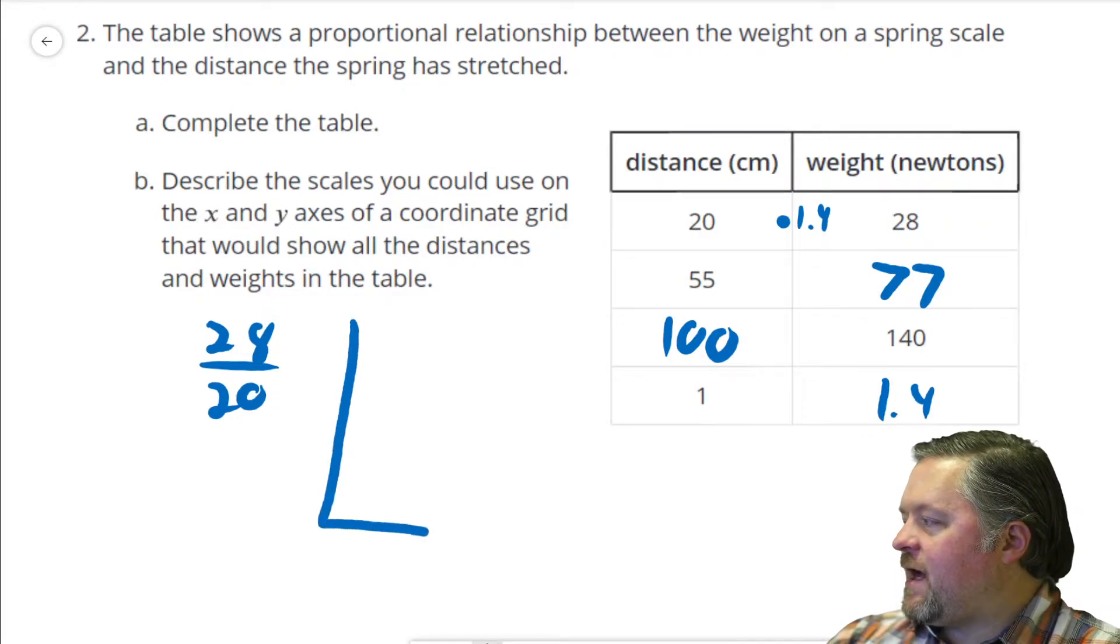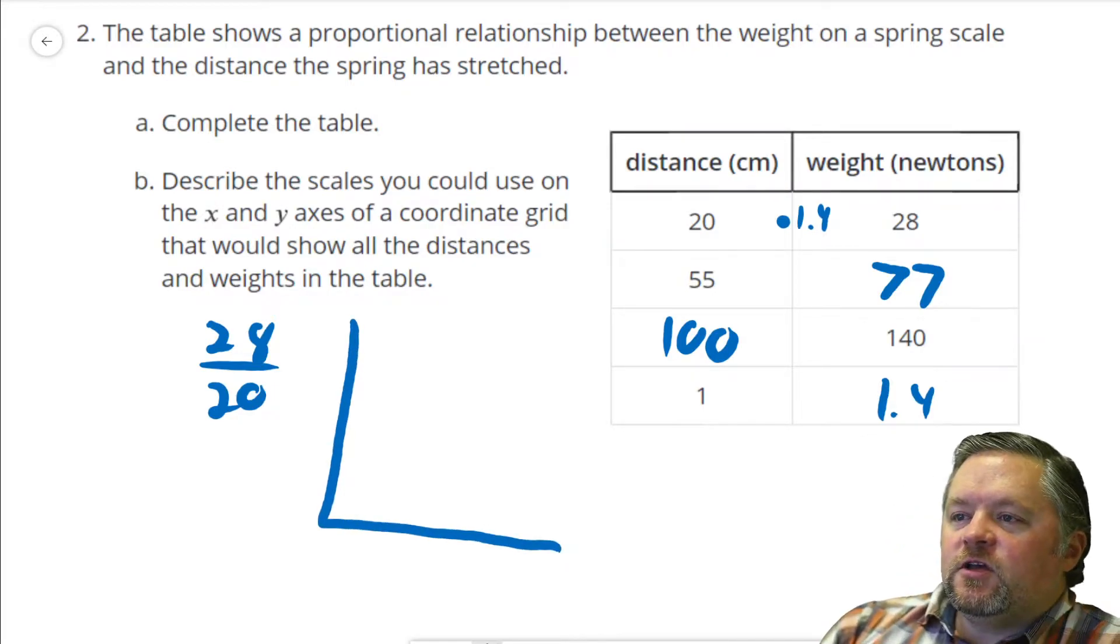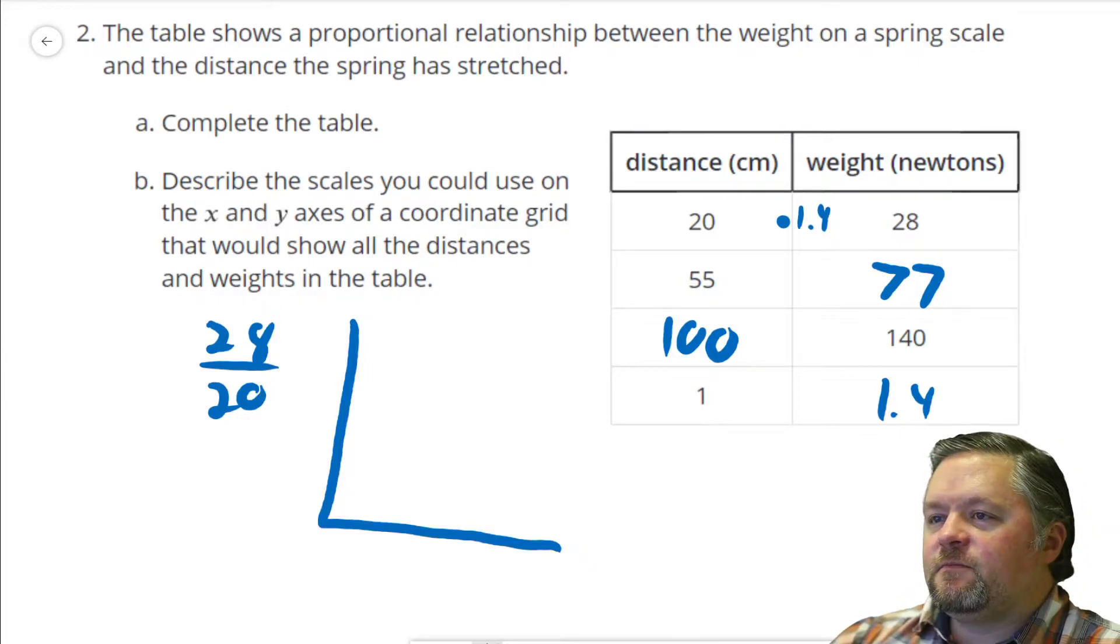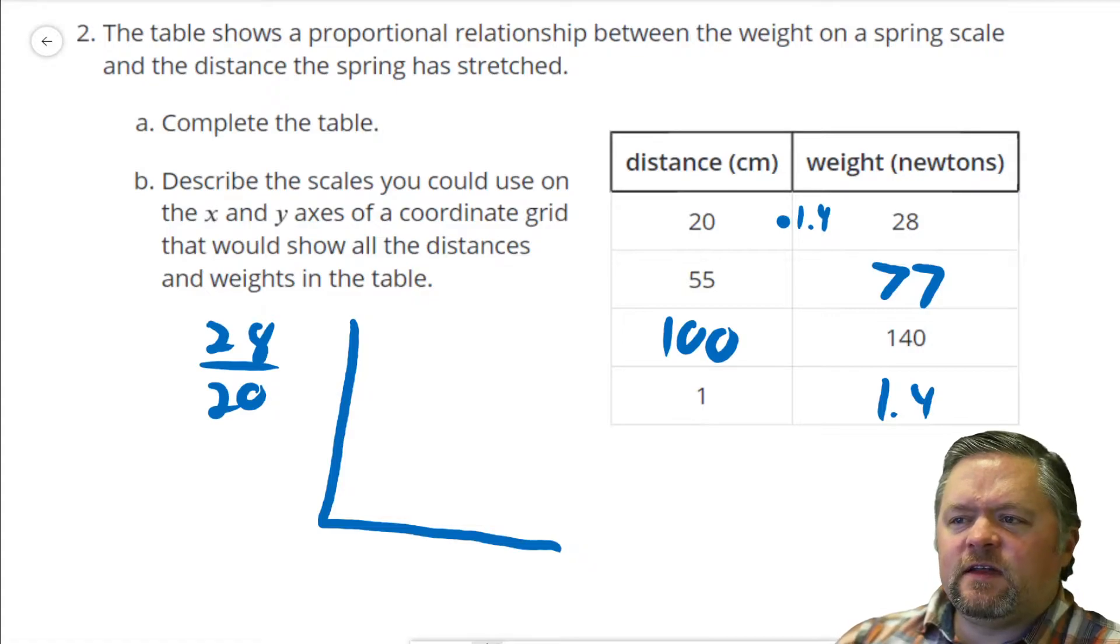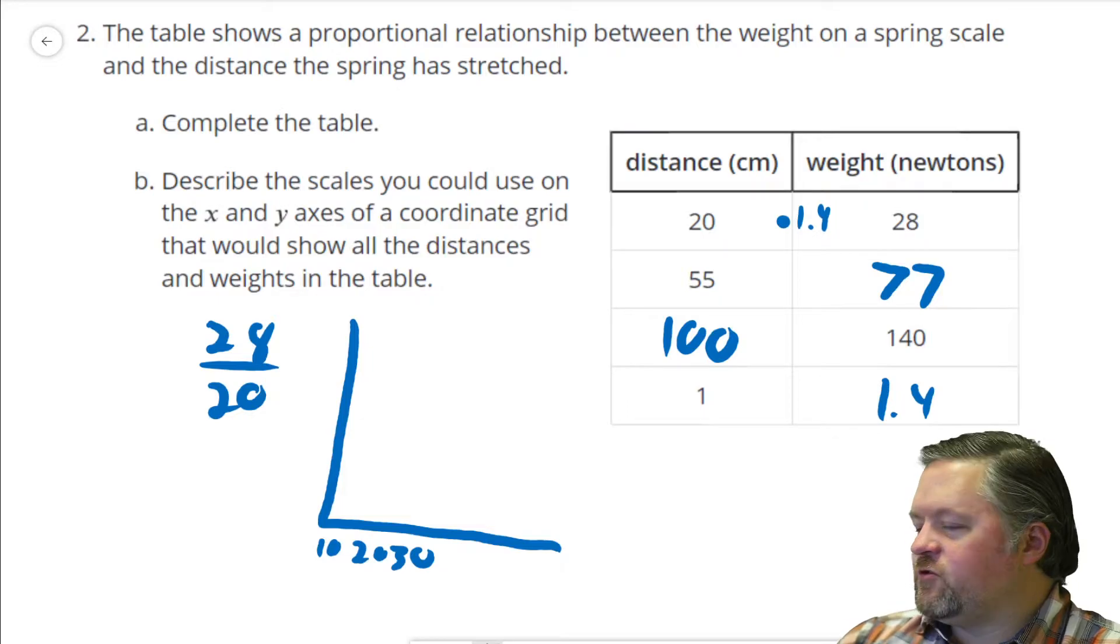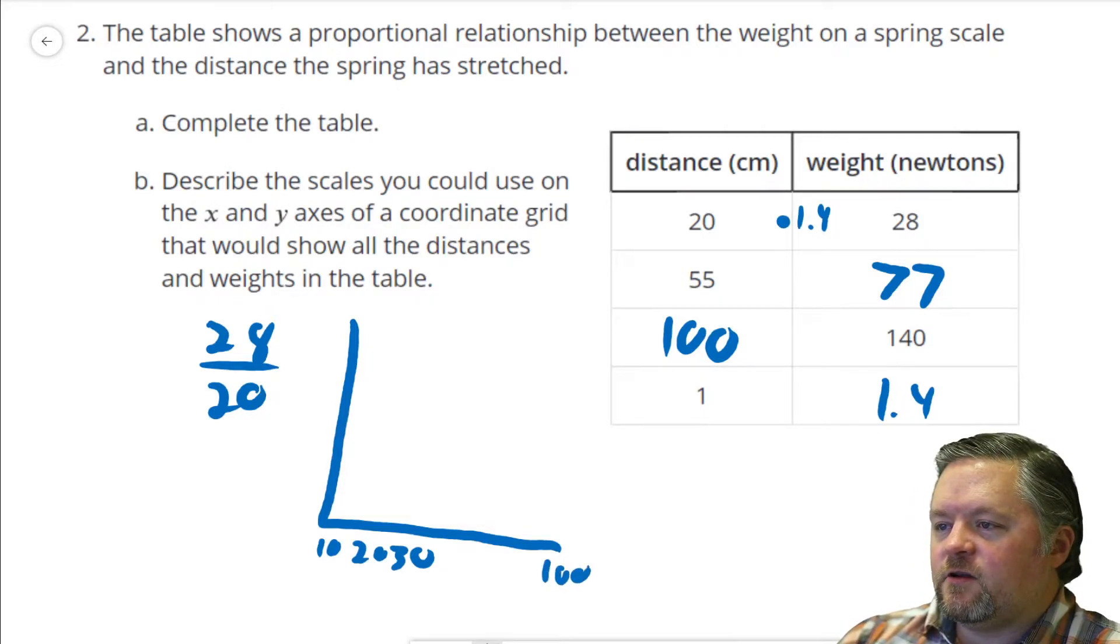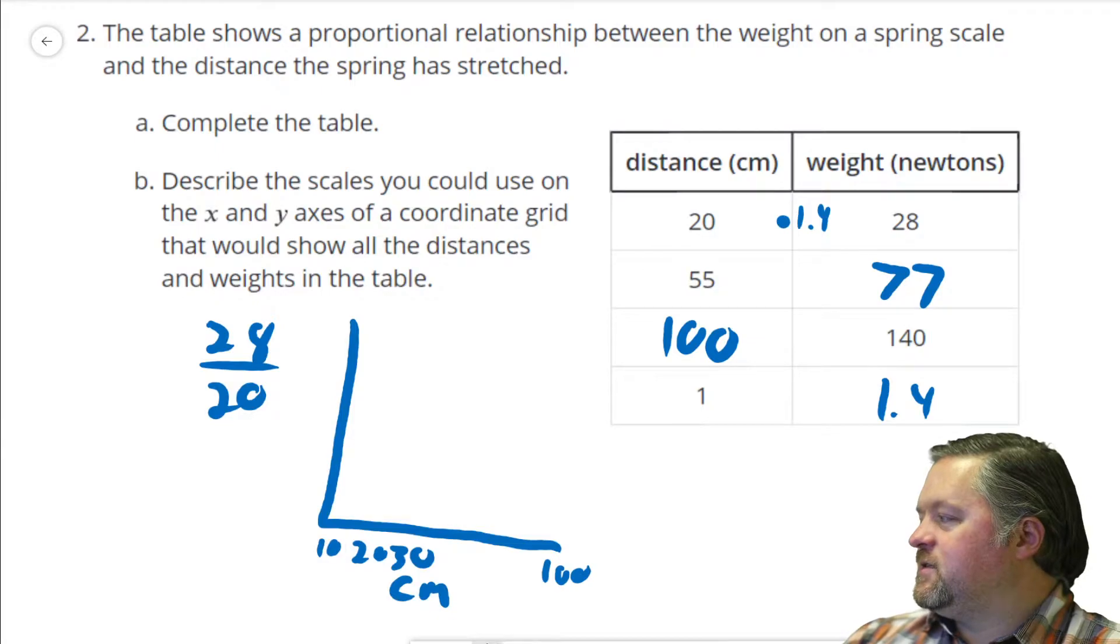Describe the scales you could use on the x and y axis of a coordinate grid that would show all distances and weights in the table. So, if we were going to graph this, what would we want to use? Well, we have to get up to 100 in the x direction, because that's the first column of the table. And we have to get up to 140 in the y column. Most graphs have enough spots for about 10, so if we count by 10 over here, my writing's too big to get to 10. But if we count to 10s and get up to 100 here, that would cover our largest distance in centimeters.